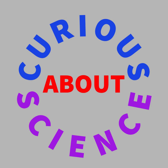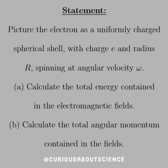Alright, as if the last question wasn't long enough with all the work and integral trickery, we got another one. At least this one has a bit of a fun twist to it, instead of just a pure computation like the P and M. The statement reads: picture an electron as a uniformly charged spherical shell with charge E and radius big R spinning at some angular velocity omega. Calculate the total energy contained in the electromagnetic fields.